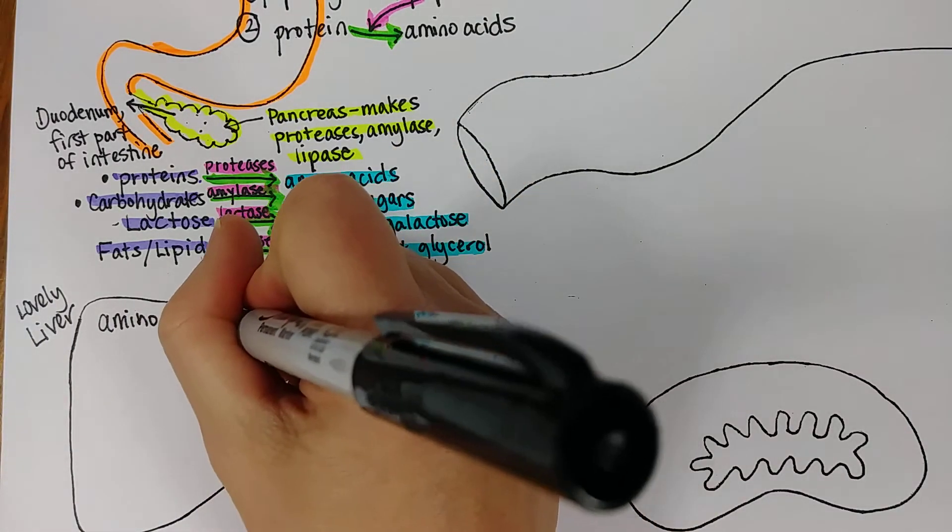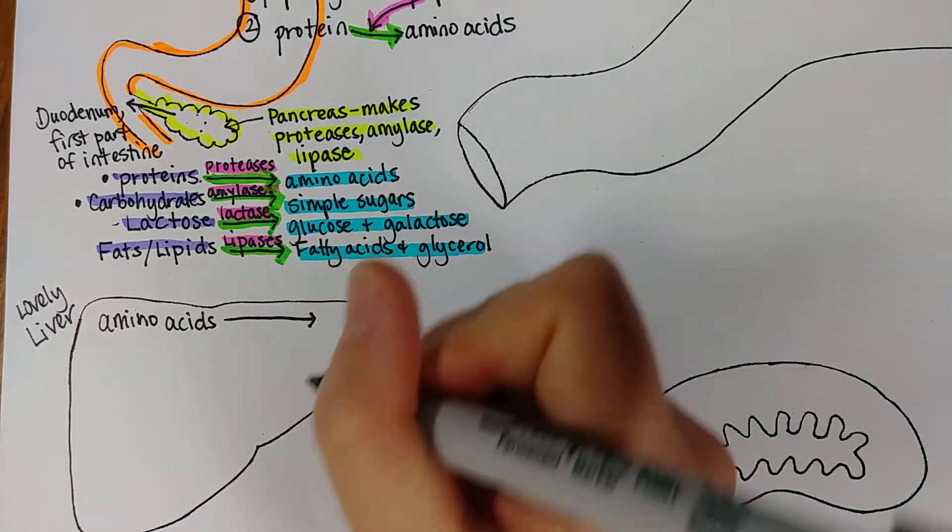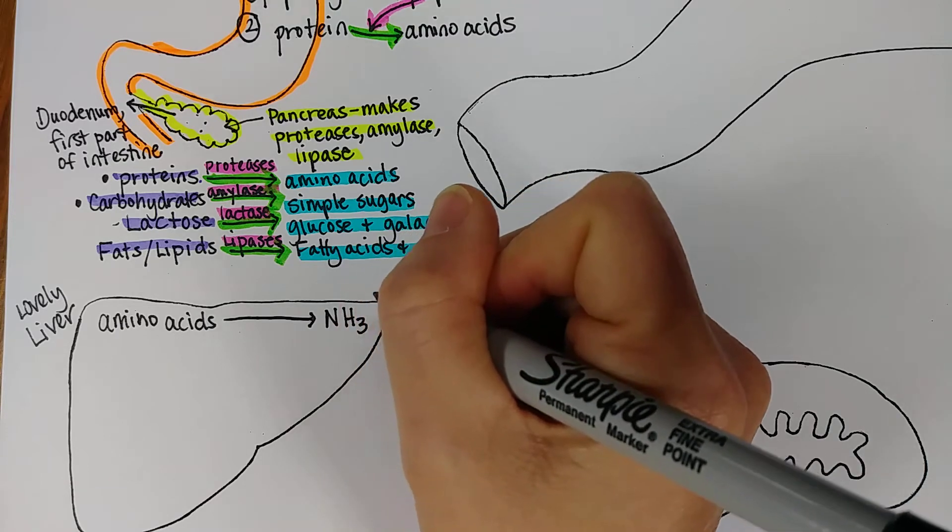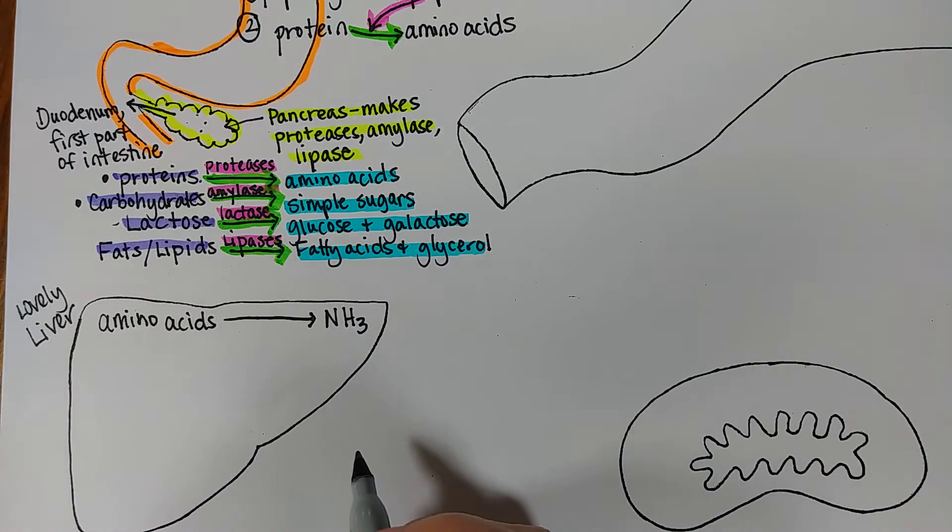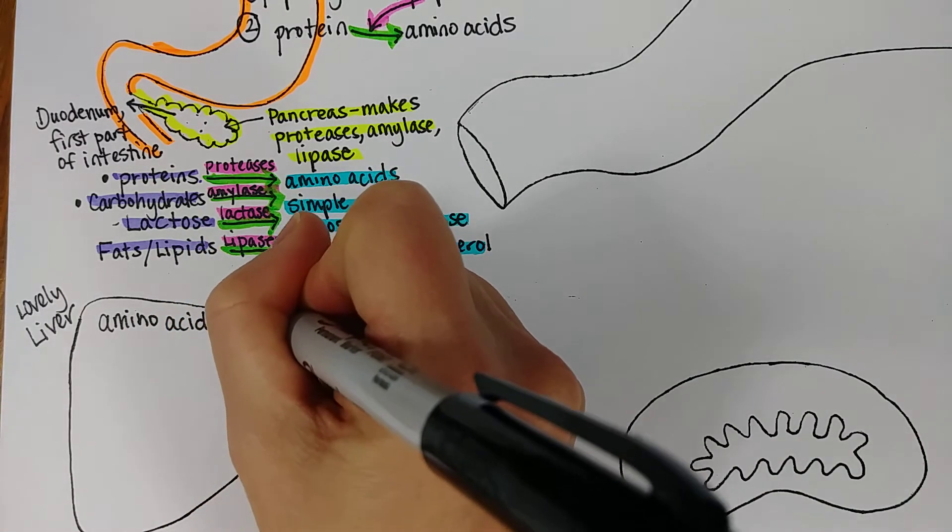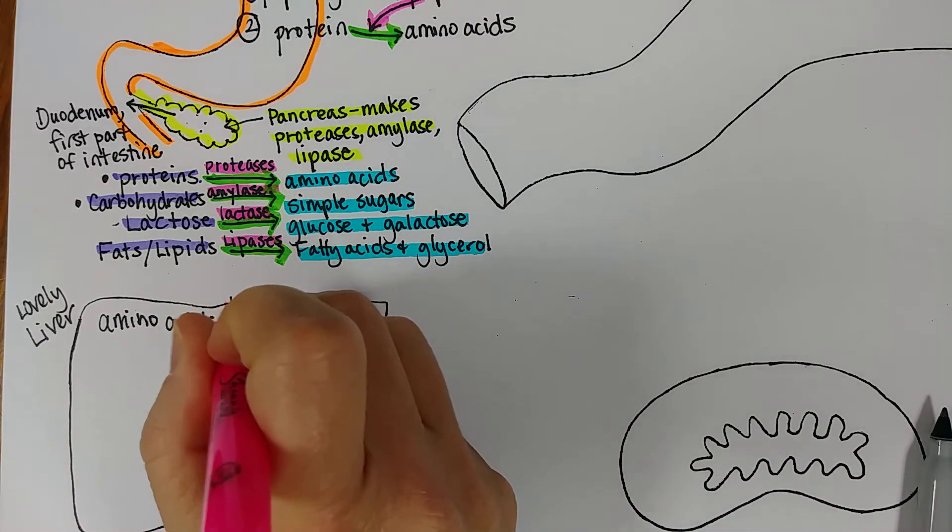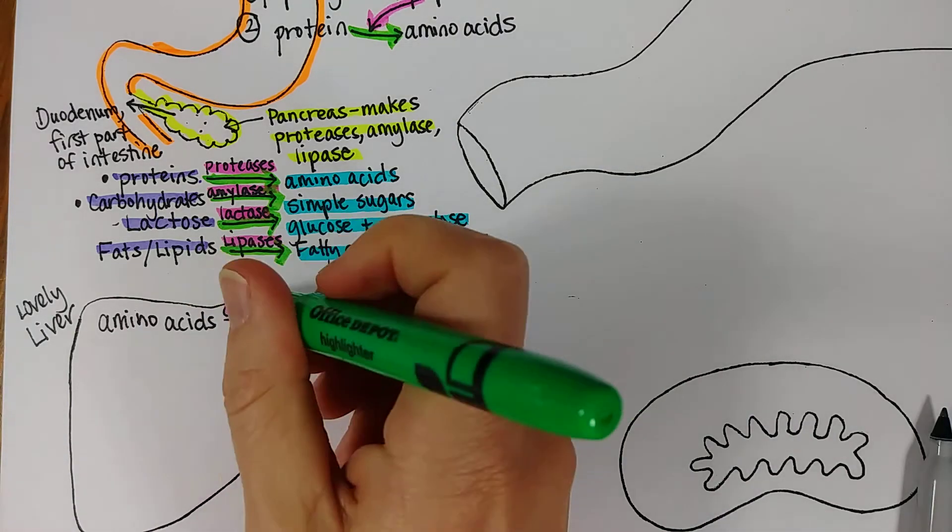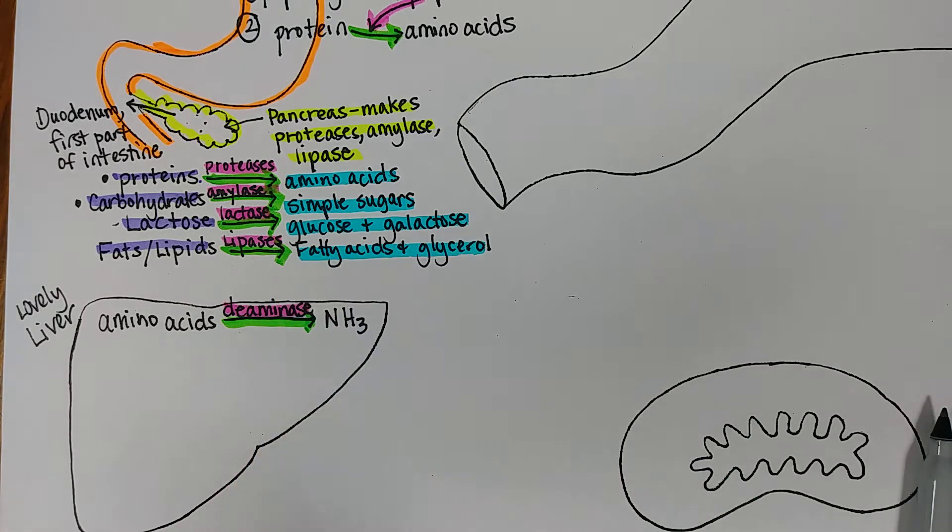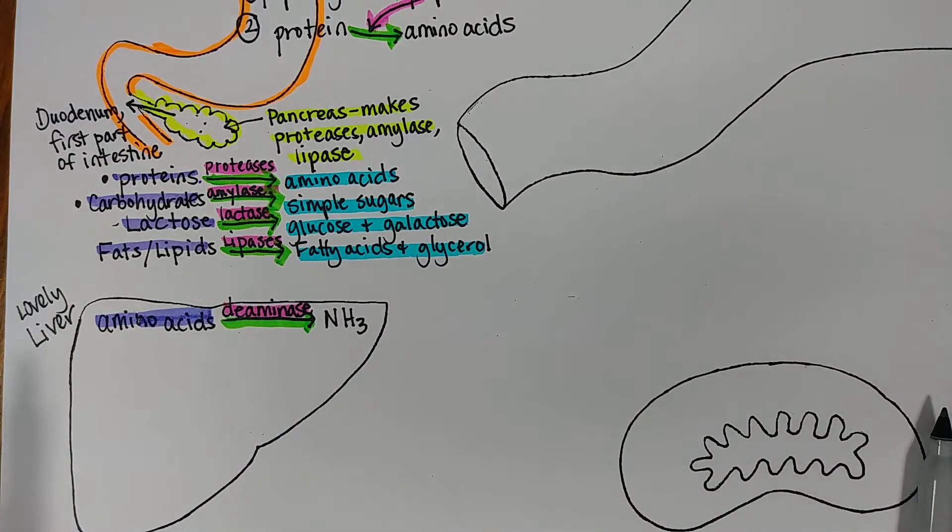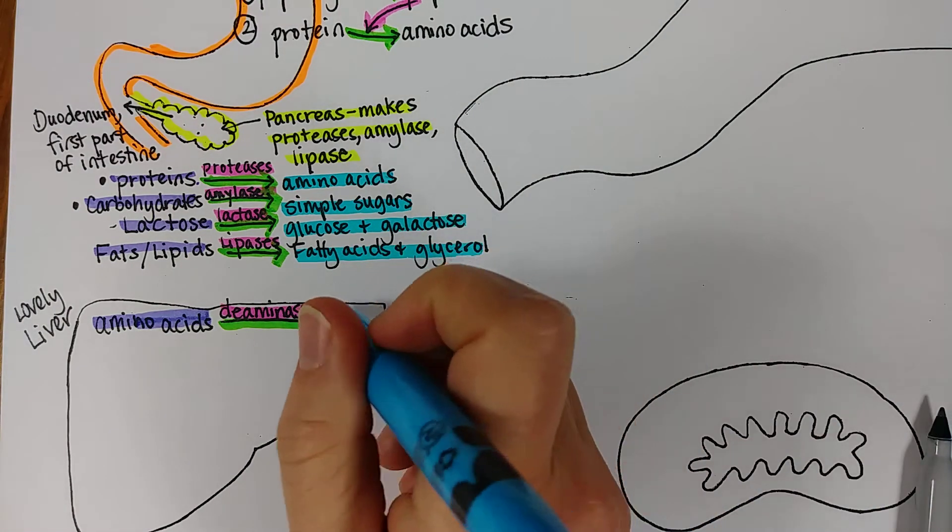Okay so amino acids have to be deaminated in order to be used or recycled and in the process you get a waste product called ammonia and this process is enzymatically helped out with enzymes called deaminase. So we're going to highlight in pink the name of the enzyme, we're going to highlight in green the arrow to show that this is a chemical reaction that is occurring because of this enzyme, and then if we follow the pattern that we did in our digestive stuff then the amino acids as a substrate would be purple and then we went ahead and put the end product here in blue.